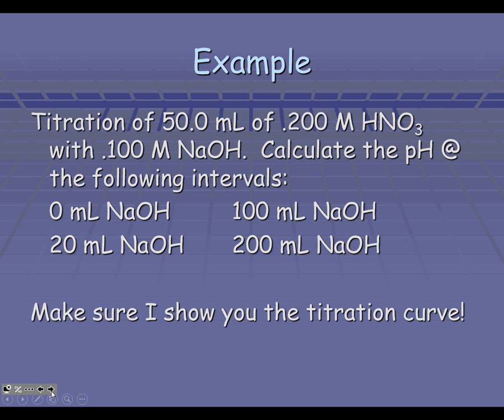The first thing that's really critical, no matter what problem you're working, is to look at these acids and bases. Here we have our strong acid, and here we have our strong base. Because it's a strong acid being titrated with a strong base, we automatically know the pH is going to be 7 at the equivalence point.